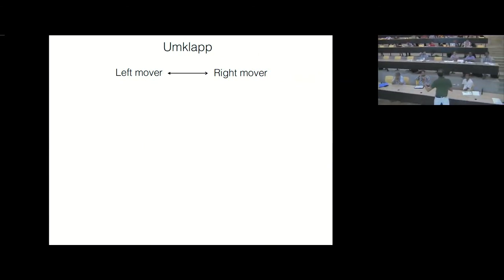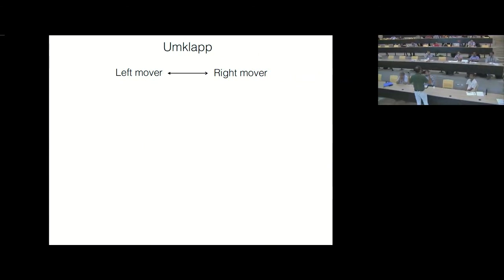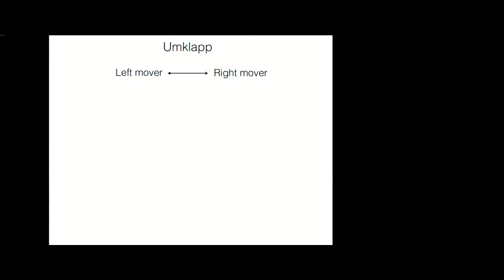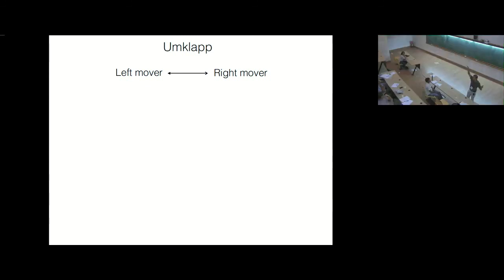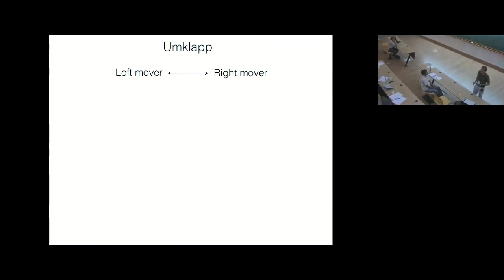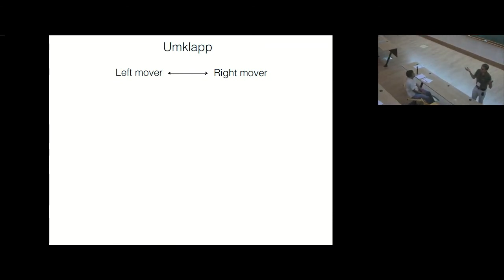What you're doing is you have free fermions and you're asking: what is the susceptibility towards pairing when you add a small attractive interaction? So that clarifies the context of the pairing susceptibility calculation.